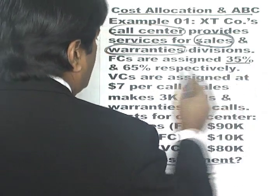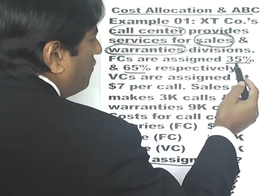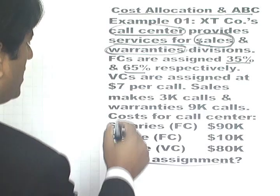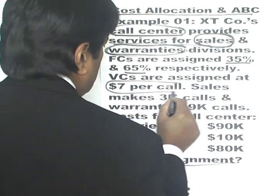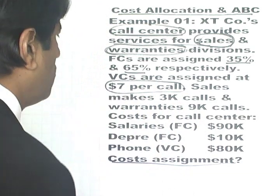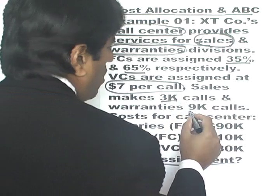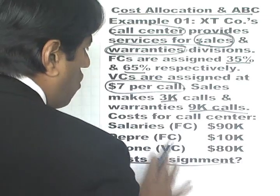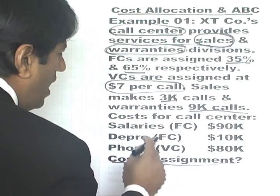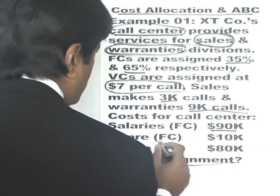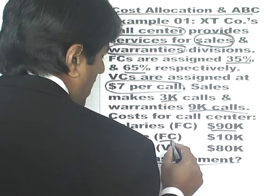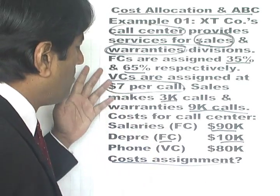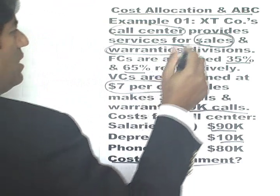Fixed costs are assigned at 35% and 65% respectively — so fixed cost goes 35% to sales and 65% to warranties. Variable costs are assigned at $7 per call. Sales makes 3,000 calls and warranties makes 9,000 calls. The costs for the call center are salaries, which is a fixed cost of $90,000, and depreciation, a fixed cost of $10,000. We want to know how much cost is going to be assigned to sales and how much to warranties.